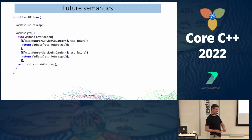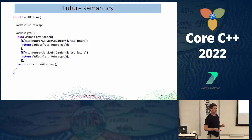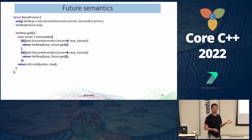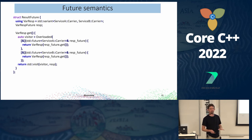Semantically, what is this thing doing? When I do the get on it, before the get returned me the response. What is the get going to return me now? The var-resp. So what is this var-resp? It's just a variant of the actual results. Semantically the same: I used to do a get on the future and get the result, and now I do a get on a variant of futures and get a variant of results. Easy to reason about.